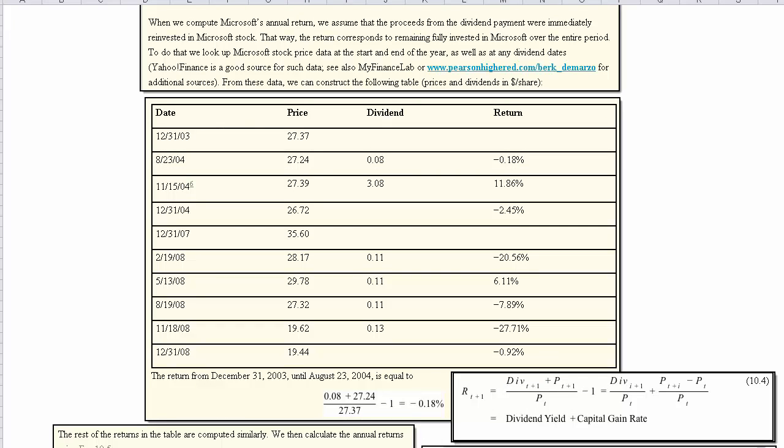At this point I've scrolled so you can see the formula in this calculation. How did we come up with negative 0.18% to show the return from December 31st 2003 to August 23rd? The 8% was the amount of the dividend available on the internet as of 8/23/04. Using this formula we take the dividend from the period we're interested in, add to it the price at that point, divide it by the original price, and then subtract 1 from it.